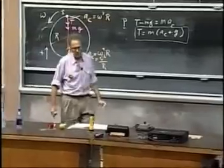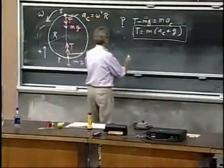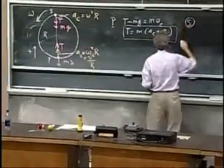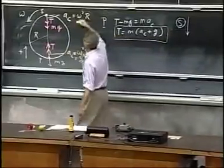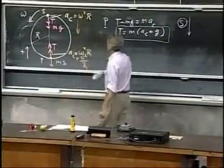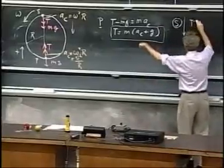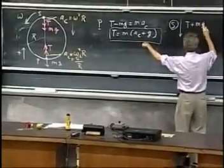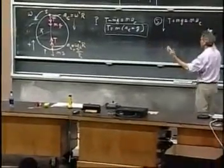Let's now look at the situation at S. At point S, I'm going to call this plus and that minus. I'm going to find that T plus Mg must be M times the centripetal acceleration, Newton's second law.